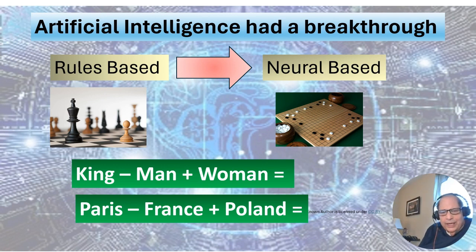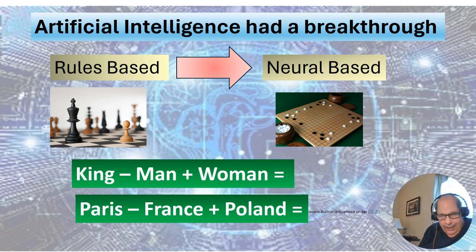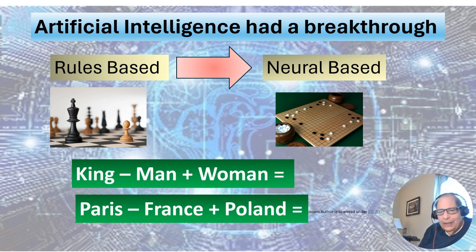Imagine if you could use what they called neural-based AI. Google took Go and said: watch the greatest Go players in the world, watch them, learn, and then see if you can play a game of Go. And that's exactly what it did. They were able to beat the really good Go players because they were able to change from rules-based to neural-based.